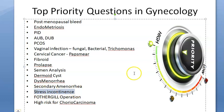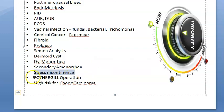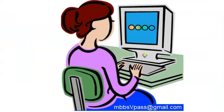Stress incontinence: after delivery, the patient will have urinary incontinence. After pregnancy, the bladder neck becomes funnel-shaped or gets displaced, so abdominal pressure cannot close the sphincter - the patient leaks urine when she coughs or sneezes. That is stress incontinence.